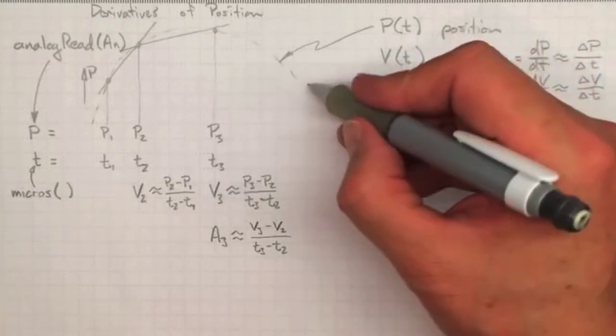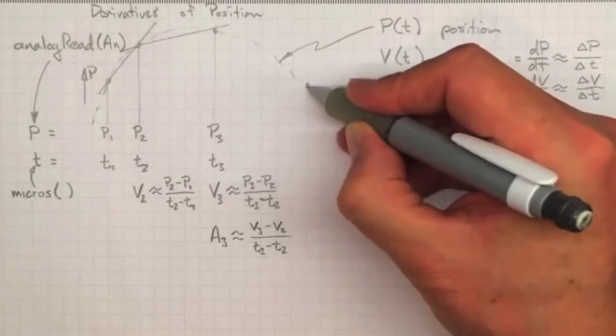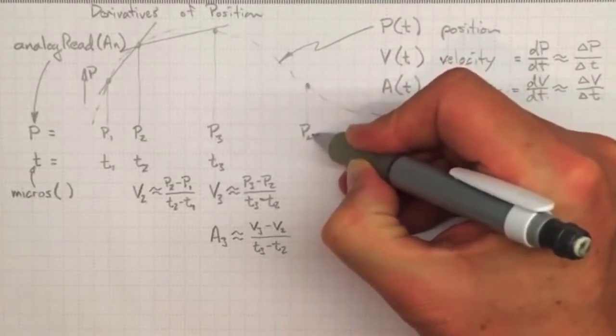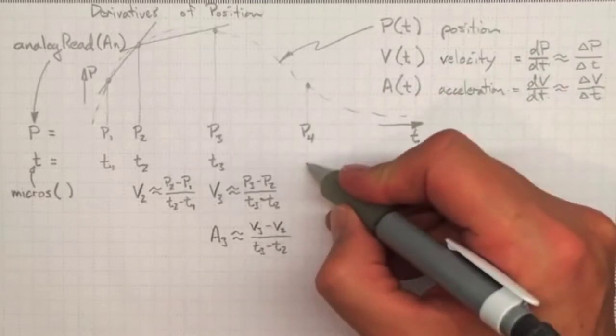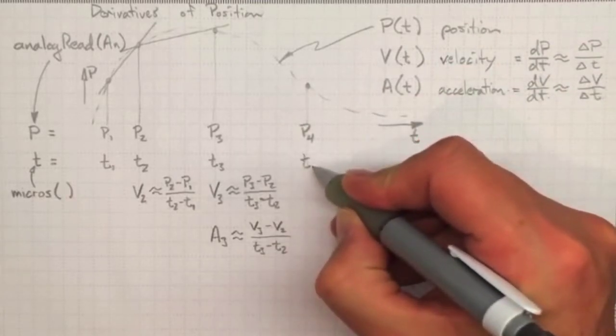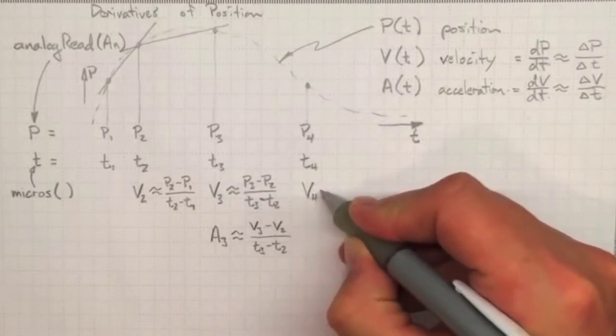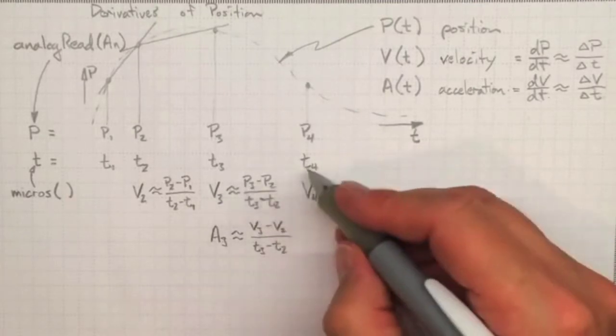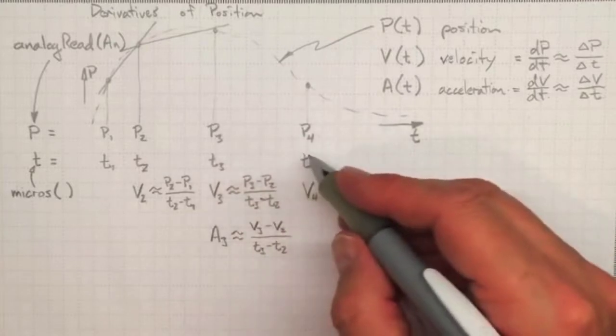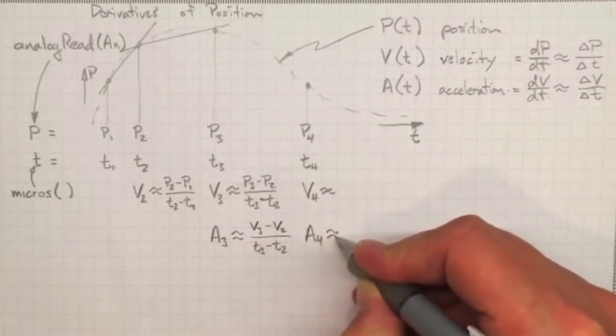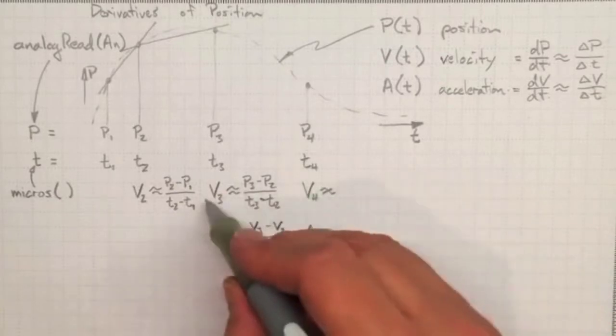And if we then go on and make another measurement a little bit later in time, we can get a position at time four and the actual time in microseconds at four. We can get a velocity estimate at four from the difference between those two positions, and we can get an acceleration estimate at four from the difference between those two velocities.